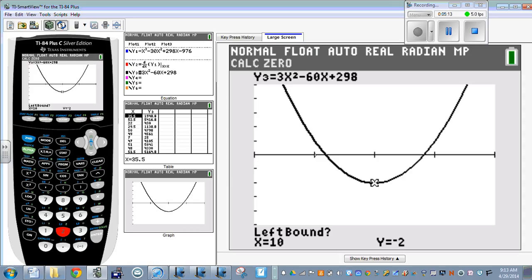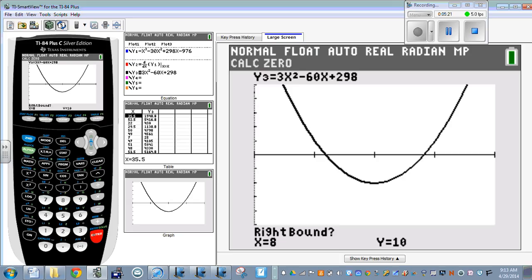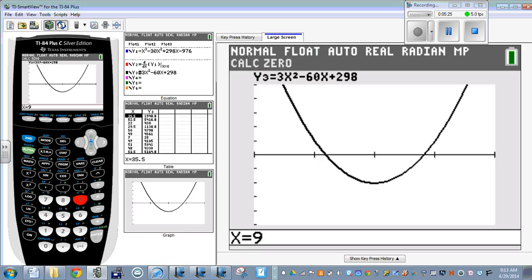So left bound, and remember this is 8, 9, 10, 11, 12. Oh, so I know 8 is to the left of this 0, so I'm going to go ahead and put that in. Just say that 8, instead of scrolling over. Enter. Right bound, 9, enter.